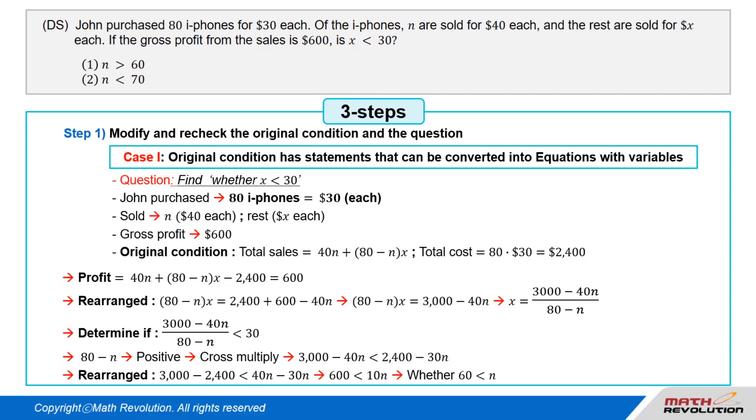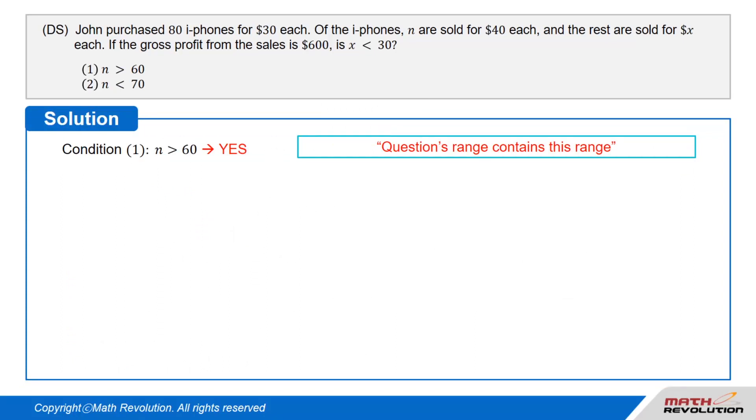By simply modifying the original condition and question, we have made this question an easy one. Let's look at condition 1, which right away gives us what we are looking for. That is, N is greater than 60. The question's range contains this range. We get always yes.